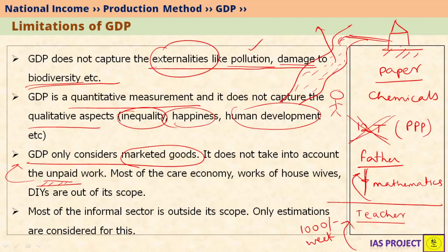The service delivered is the same in both cases — the father and the teacher are both teaching mathematics to children. But when the teacher provides the service, he takes money for it; the father does not. Therefore, the father's service is not counted as an economic service and is not included in GDP. Similarly, most of the care economy done by housewives and do-it-yourself activities are excluded. If you install a fan yourself it is not counted, but if you call an electrician and pay them, it is counted in GDP.